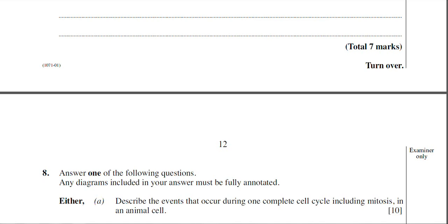This is question 8 now from the June 2010 BY-1 paper. This is the long answer question and we're looking at part A. It's asking us to describe the events that occur during one complete cell cycle including mitosis in an animal cell.